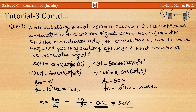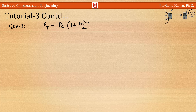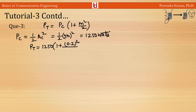To calculate the transmitted power of the AM signal, we need carrier power and sideband powers. The carrier power Pc = (1/2)·Ac² = (1/2)·50² = 1250 watts. The transmitted power Pt = Pc·(1 + m²/2) = 1250·(1 + 0.04/2) = 1275 watts.